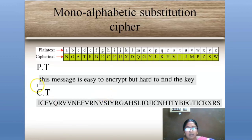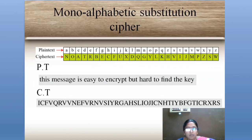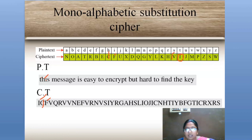Here is an example. The plaintext is 'this message is easy to encrypt but hard to find the key.' We find the ciphertext using our shuffled alphabet table. The first letter T maps to I, the letter H maps to C, the letter I maps to C, the letter S maps to V. Likewise, applying all letters from the ciphertext table, we get the ciphertext: I-C-F-V-Q... and so on up to the final letter S.